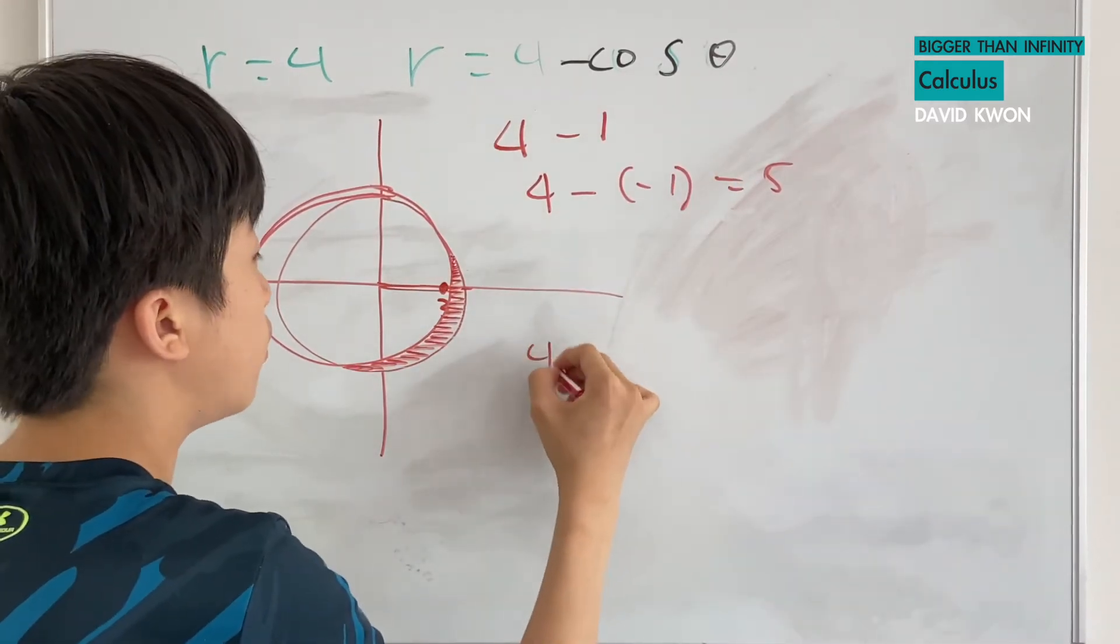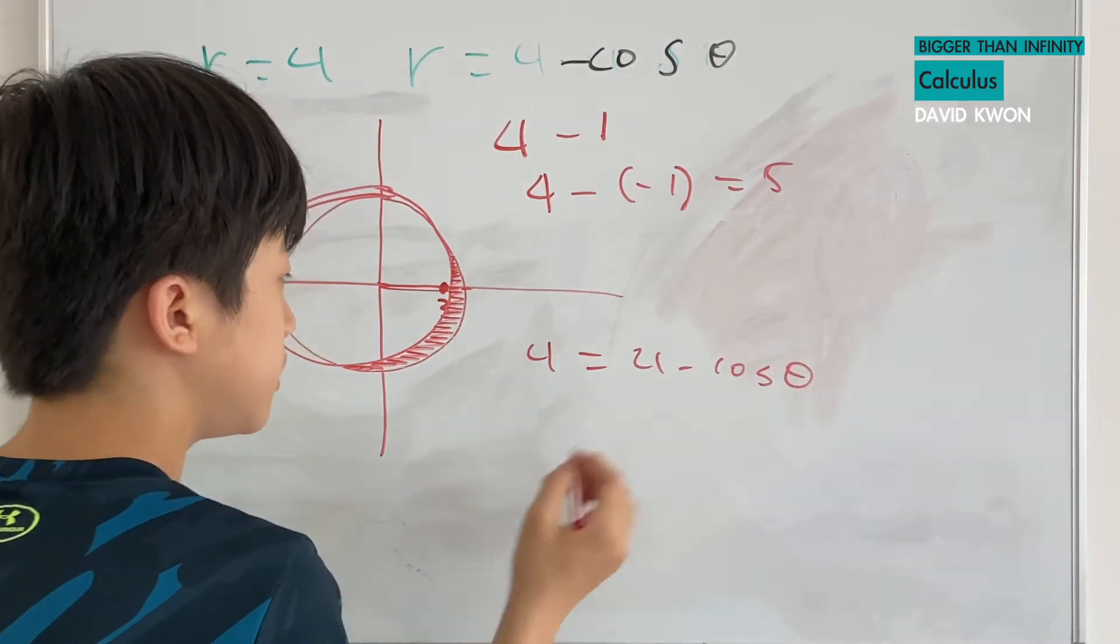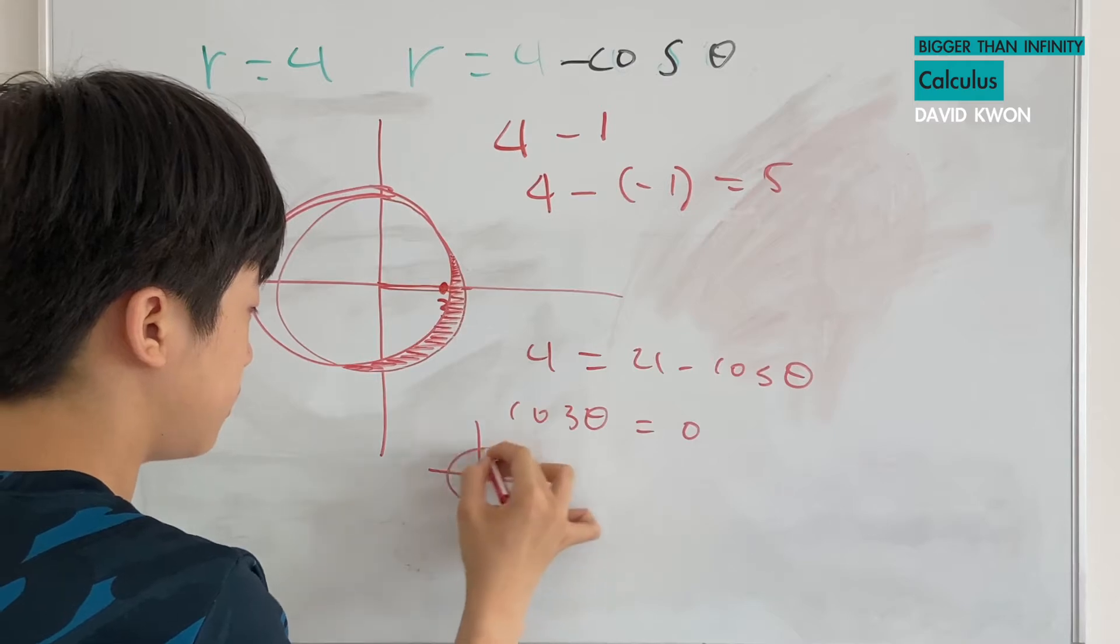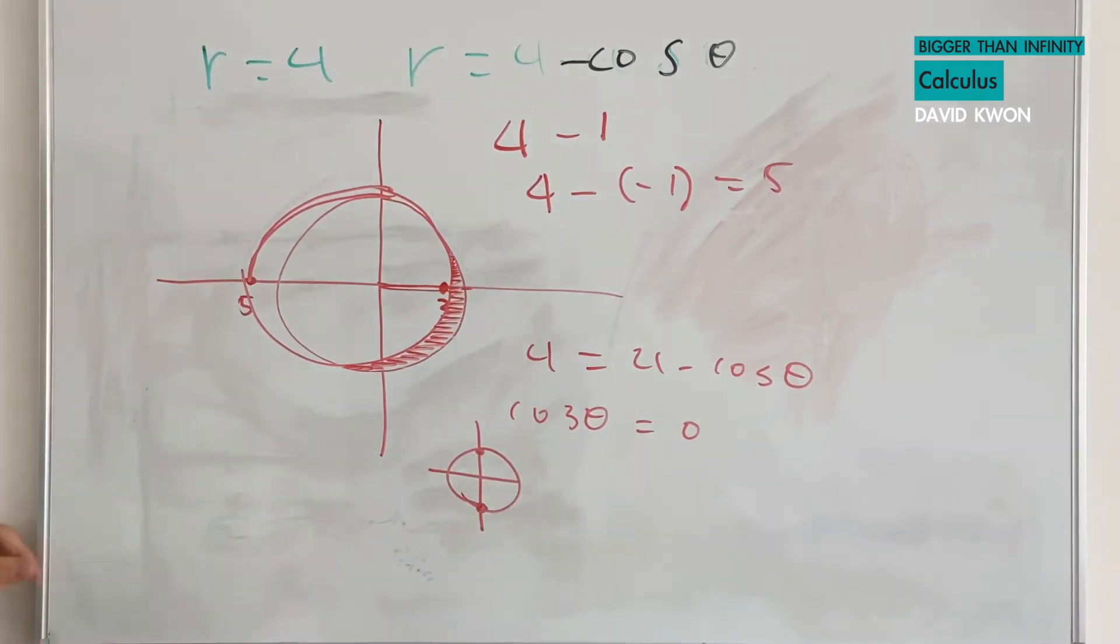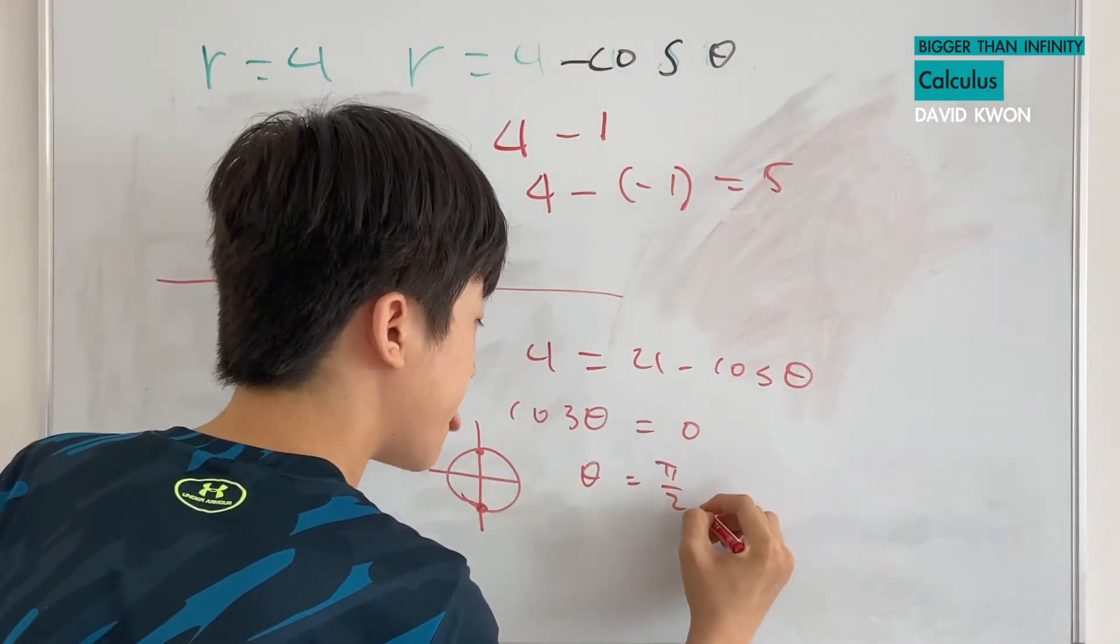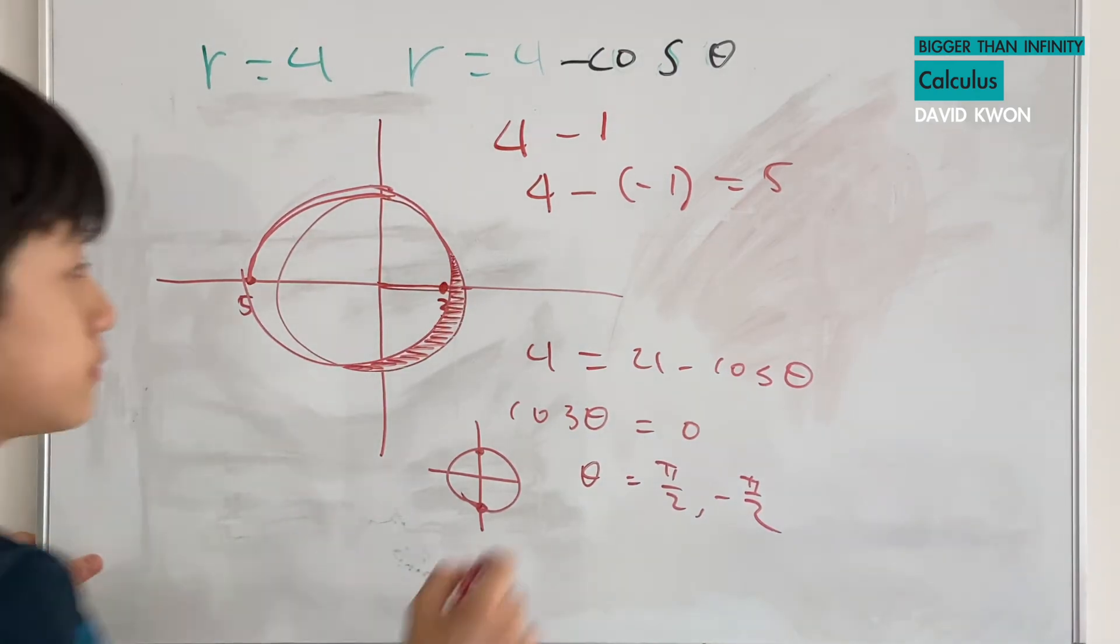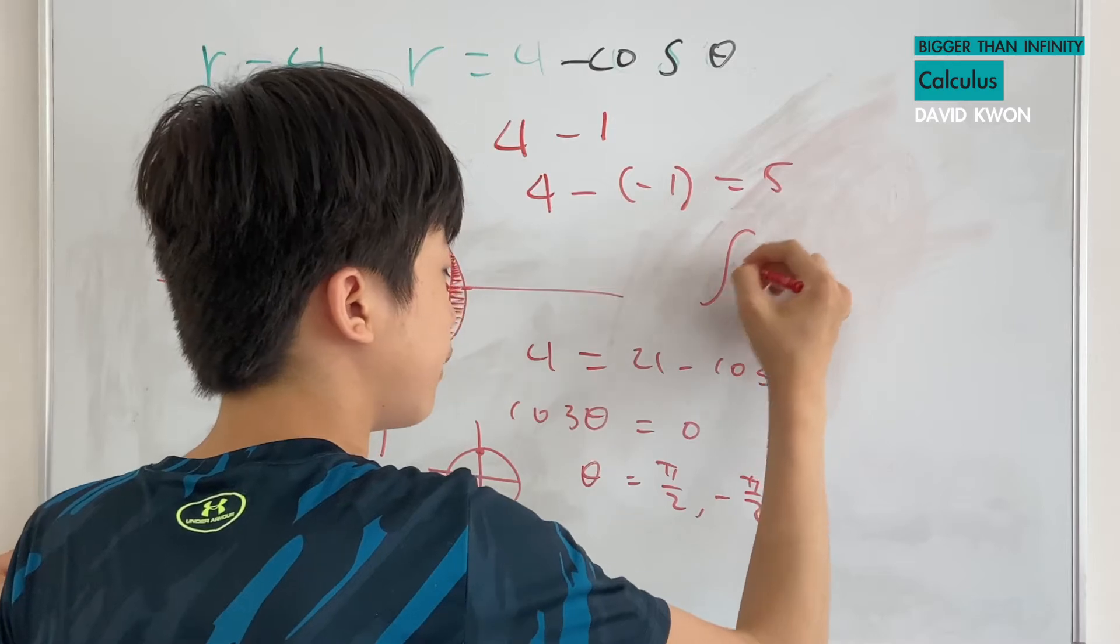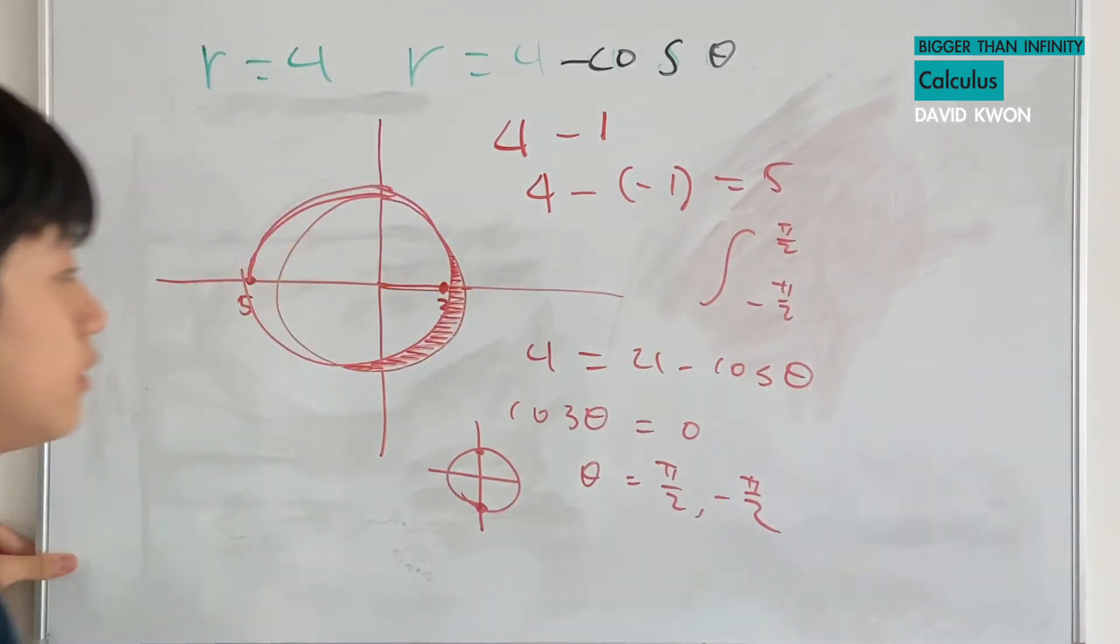That is going to be 4 equals 4 minus cosine theta. So cosine theta has to be 0. And during the unit circle, the only way where cosine theta can be 0 is when the theta is equal to pi over 2 and negative pi over 2. So we know that the integral interval will be negative pi over 2 to pi over 2.